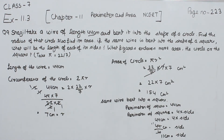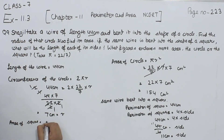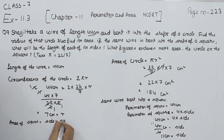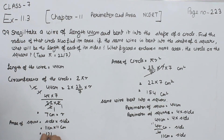Now we have to find the area of the square. The area of a square is equal to side multiplied by side. So the side is 11 cm multiplied by 11 cm, which gives us 121 cm².